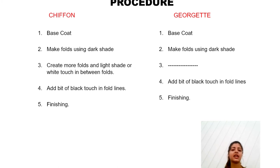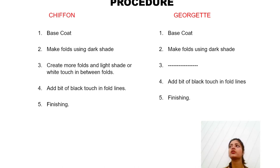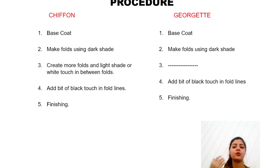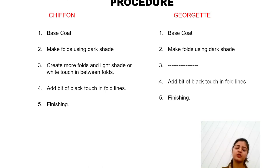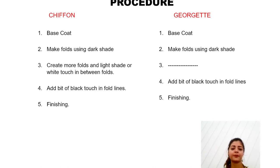The first procedure is the base coat. In the base coat, the ratio of water should be more than color. Suppose we are taking green color — we need to add more water and very less green. Once the base coat is done, we need to make our folds. As usual, we use a darker shade of the color to depict folds. But if we do the same thing for both georgette and chiffon, how will the difference arise? That's the point.